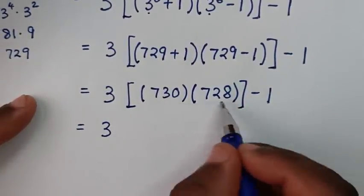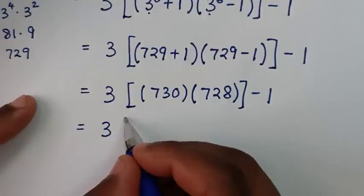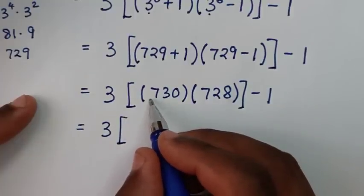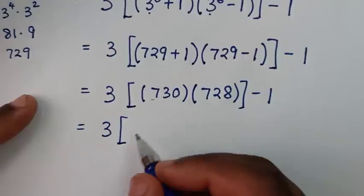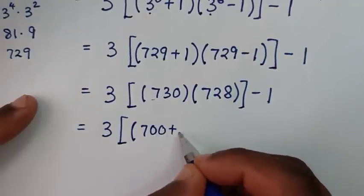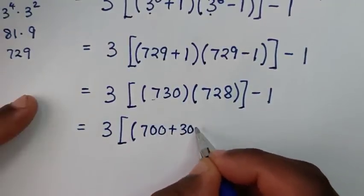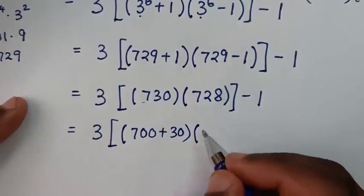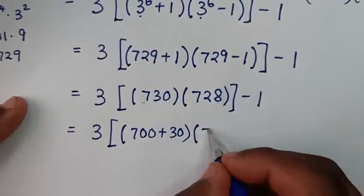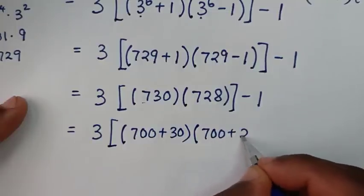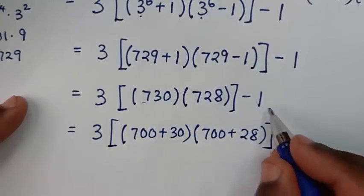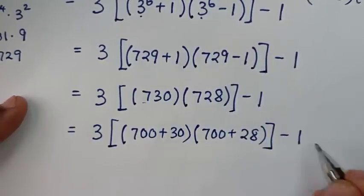Then in the next step, to be able to multiply this easily, it will be: bracket (730 is the same as 700 plus 30), times (728 is the same as 700 plus 28), then bracket minus 1.